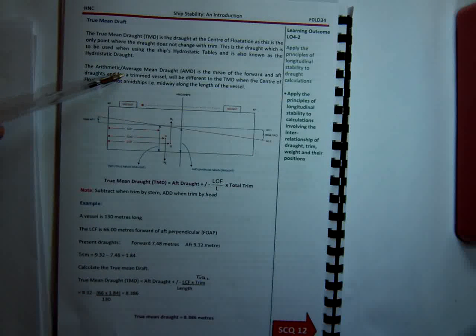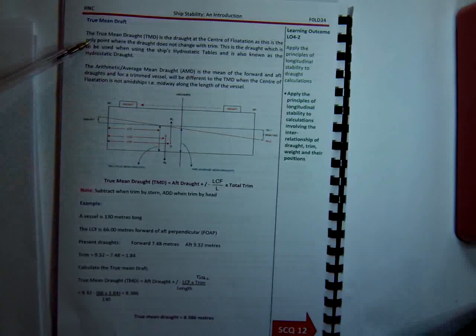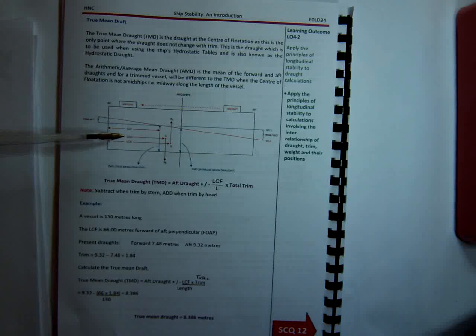The arithmetic average mean draft is simply the two drafts forward and aft added together and divided by two. And that's different than the true mean draft because the true mean draft is the draft at the centre of flotation.